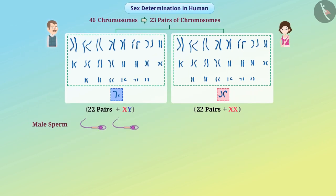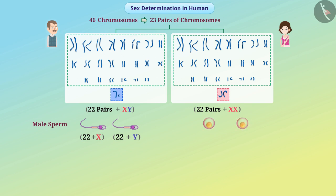When sperm is produced in a male, the 23 pairs of chromosomes are divided such that one chromosome of each pair is acquired by each sperm cell. In this way, half the sperms have X chromosomes and half the sperms have Y chromosome. Since the sex chromosome in females is XX, all the reproductive cells, i.e., eggs, have X chromosome.